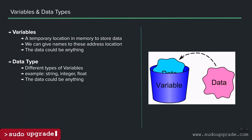The next topic is variables and data types. When we as humans need to save something, we commit it to memory. Back in the old days before smartphones, I had all my friends' numbers memorized. Similarly, in programming there's something called variables — a variable is a temporary location in memory to store data. Each computer has a CPU and memory, and the combination of those two is called compute.